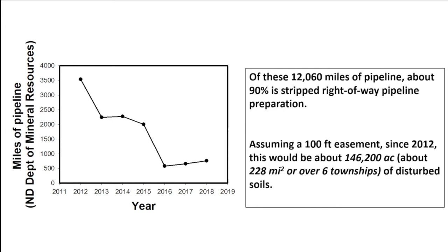When we look at the graph on the left, we have millions of miles of pipeline that were installed basically between 2012 and 2018 in the state. If you think about this with a hundred-foot easement, that disturbance is about six townships in size. So it's not an insignificant amount.